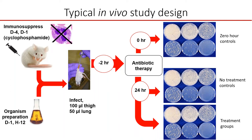When antibiotic therapy starts, an important group of controls called zero-hour controls are examined — a group of animals is sacrificed to determine the quantity of infectious burden at the time antibiotic therapy begins. Then, over the experimental period of most often 24 hours for bacterial pathogens, no-treatment control groups and treatment groups are sacrificed and the CFU burden in various groups is determined.